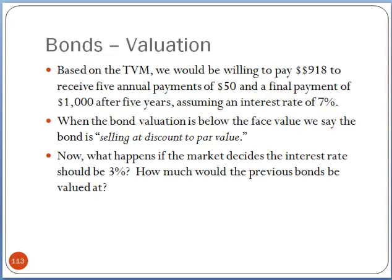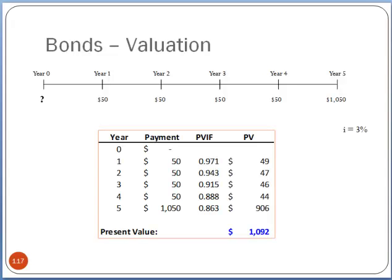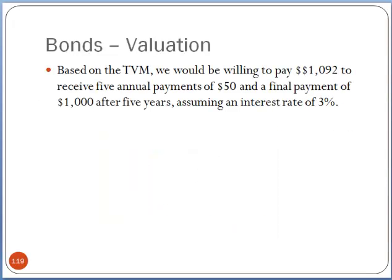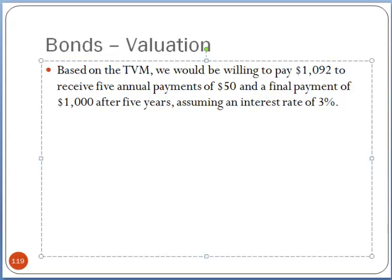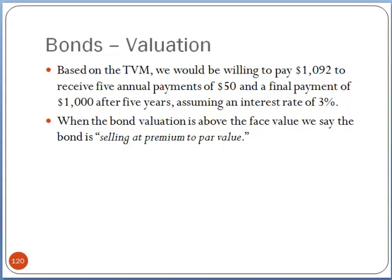Now let's look at the opposite situation. What happens if the market decides the discount rate should be 3%? The present value today of all these payments is $1,092. Based on the TVM, we'd be willing to pay $1,092 to receive five annual payments of $50 and a final payment of $1,000 after five years, assuming an interest rate of 3%. When the bond valuation is above face value — $1,092 versus $1,000 — we say the bond is selling at a premium to par value. It makes sense: we're actually willing to pay more than the face value.